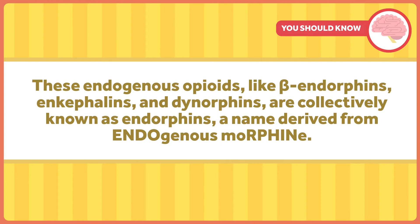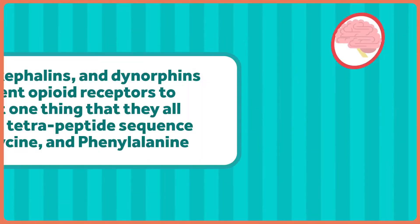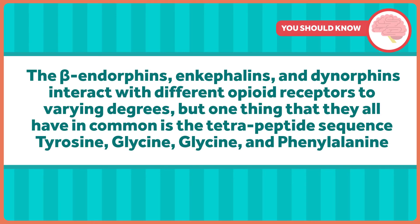These endogenous opioids, like beta-endorphins, enkephalins, and dynorphins, are collectively known as endorphins, a name derived from endogenous morphine. The beta-endorphins, enkephalins, and dynorphins interact with different opioid receptors to varying degrees. But one thing they all have in common is the tetrapeptide sequence tyrosine, glycine, glycine, and phenylalanine — or TYR-GLY-GLY-PHE. This sequence is really important because it's needed for the endogenous opioid to interact chemically with the opioid receptor on a neuron.